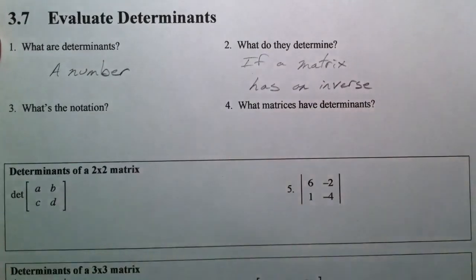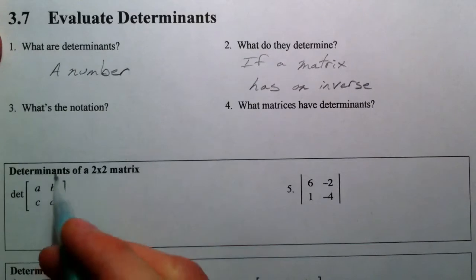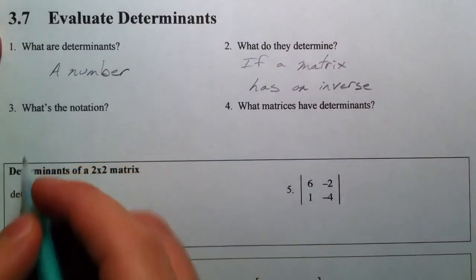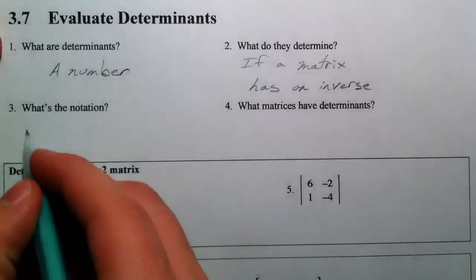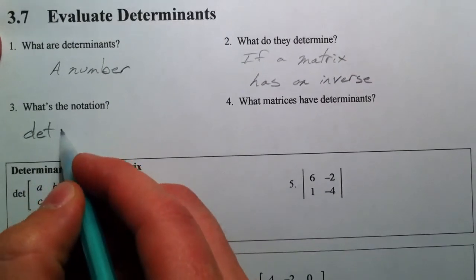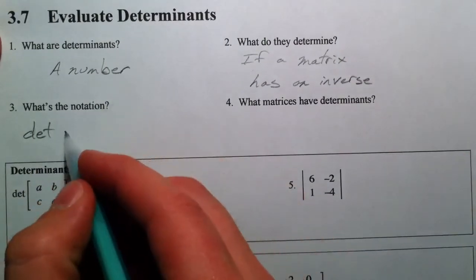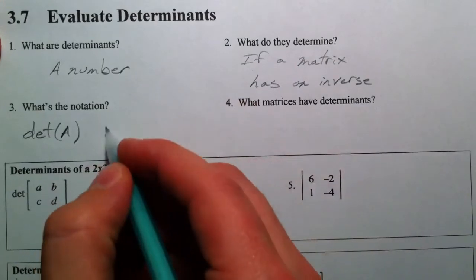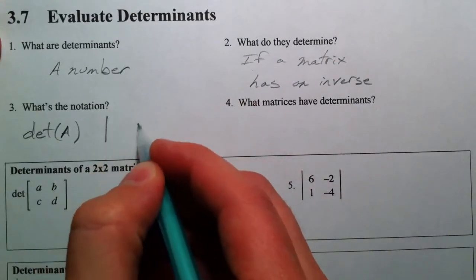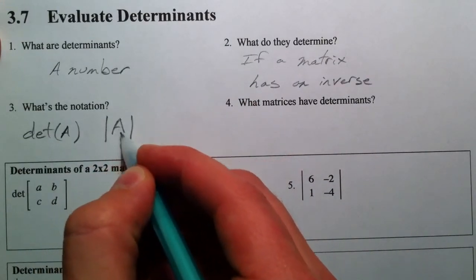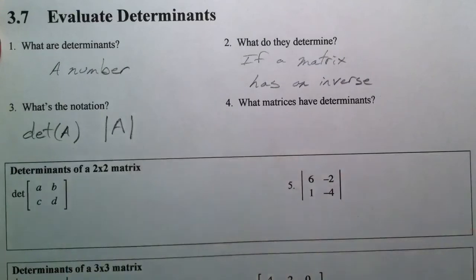And what's the notation? Well, the notation is you can either use DET like this — DET standing for determinant — the determinant of A, or you can use absolute value bars around A, and that also means find the determinant of matrix A.